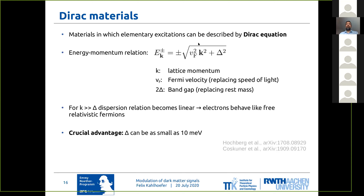In particular, for large lattice momenta, the dispersion relation becomes linear, so you effectively have electrons that behave like free relativistic fermions. What makes these materials so attractive is that the band gap delta can be really tiny — as small as something like 10 milli-electron volts.